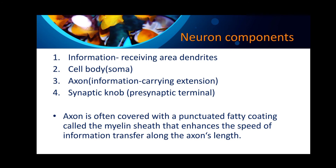The axon is often covered with a punctuated fatty substance called the myelin sheath, which enhances the speed of information transfer along the axon's length. The myelin sheath covering present on the axon increases the speed of information transfer along the axon's length.